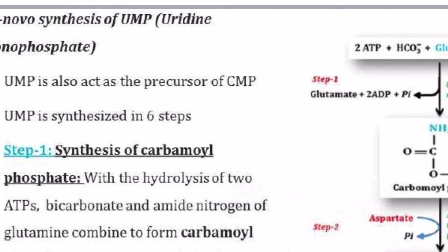Why UMP? Because UMP is uridine monophosphate, and from this uridine monophosphate you can further prepare UDP and UTP. After that, you can form CTP. So UMP also acts as the precursor of CMP. We will discuss this later.